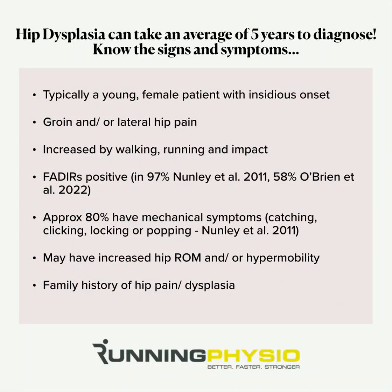Hip dysplasia is often missed — it can take an average of five years to diagnose, and people often see around three clinicians before someone suspects the diagnosis. The key signs and symptoms: it's typically a young female patient describing an insidious onset, often with groin and/or lateral hip pain, usually aggravated by walking, running, and impact. In most patients you'd expect a positive FADIR test — flexion, adduction, internal rotation — and around 80% will have mechanical symptoms like catching, clicking, locking, or popping.